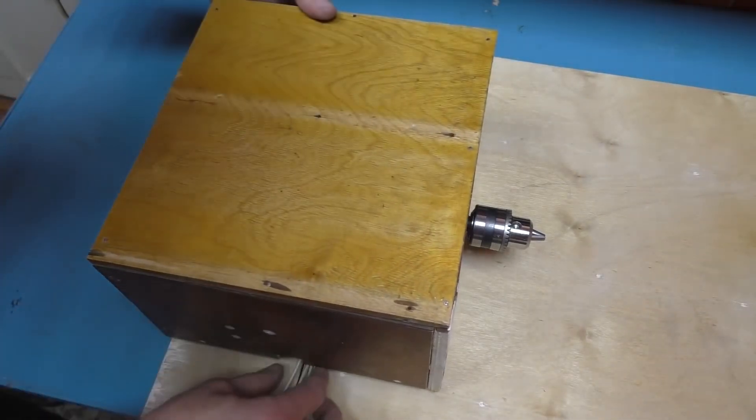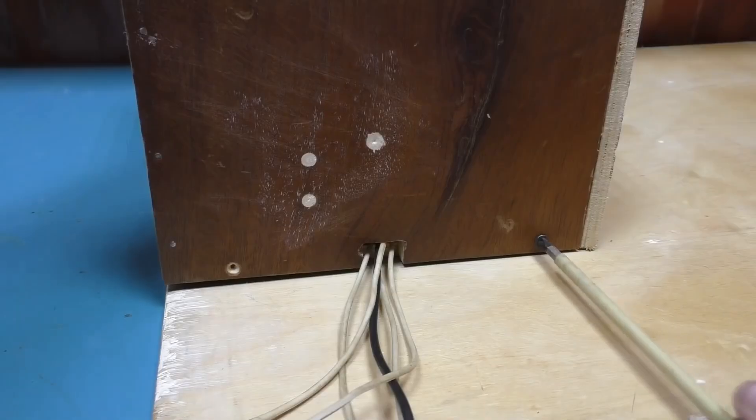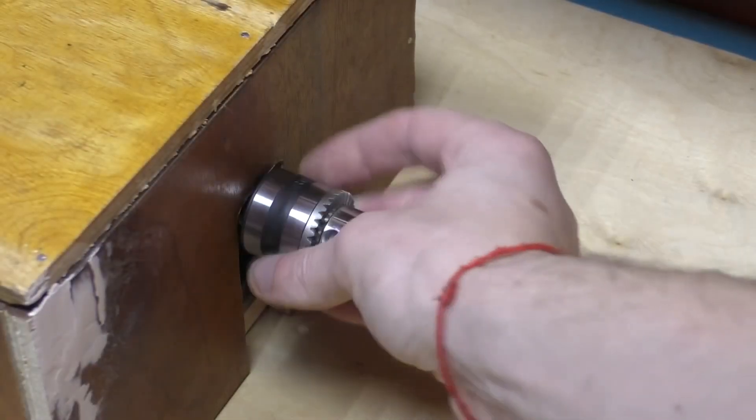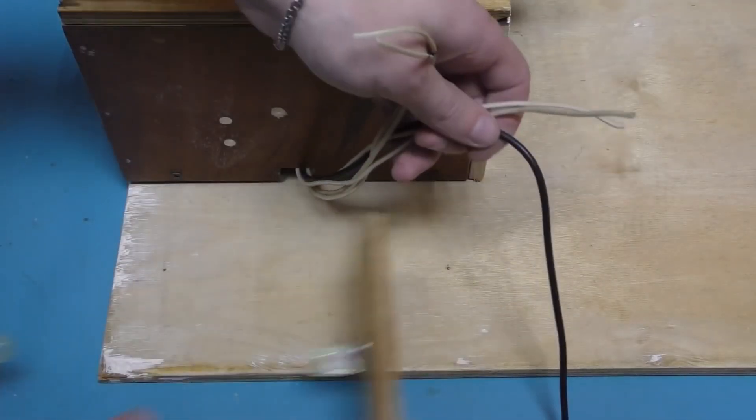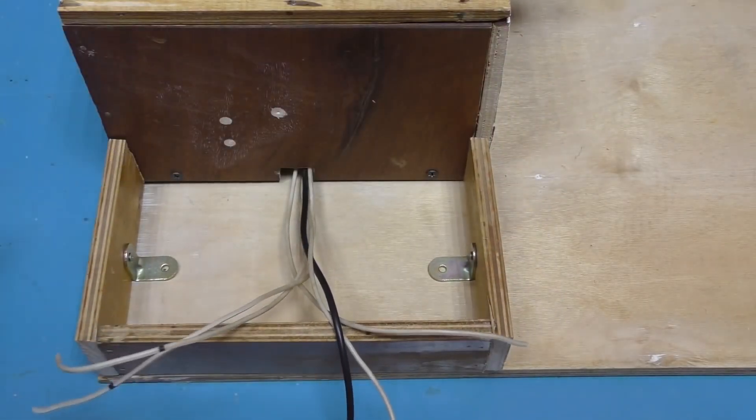With that done, the motor can now be covered using the plywood housing I made. Let's ensure nothing hinders the rotation. Let's screw on these little sides. This will be the housing where all the electronics will be placed.